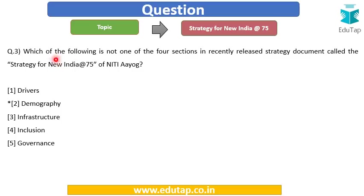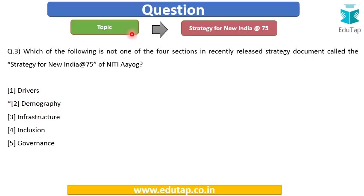We can now easily answer this question. The four sections in this report are Drivers, Infrastructure, Inclusion, and Governance. So 'Demography,' which appears in option number 2, is not one of the four sections. The answer to this question is option number 2.